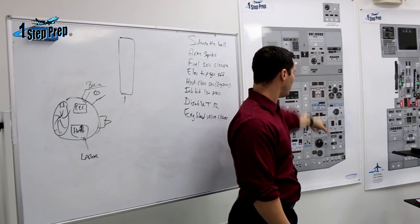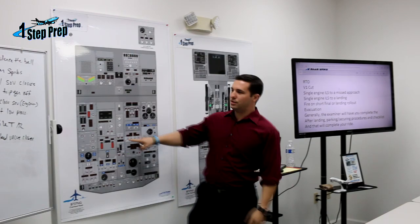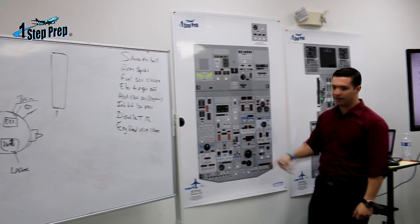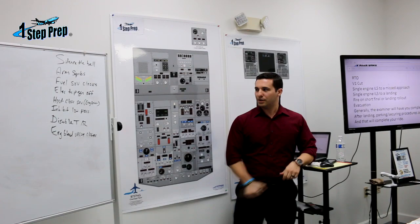Close the fuel shutoff, trip the generator, close the hydraulic shutoff. I use the hydraulic panel to cover these three items: close the shutoff valve on the engine-driven pump, inhibit the low pressure light, disable the thrust reverser — because those are all hydraulic items. Then you move to the engine bleed valve and just note that it's going to close. Easiest way to remember it. You can use both methods — use everything you've got.